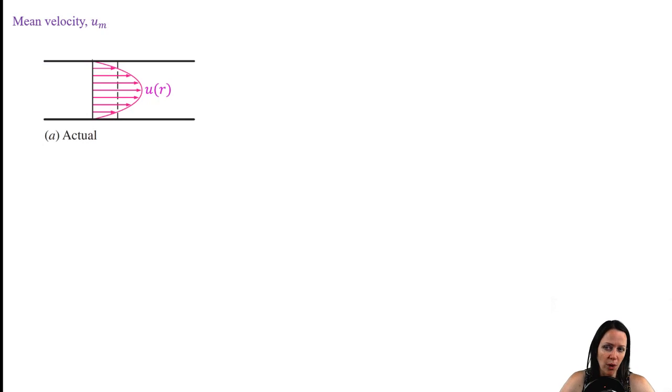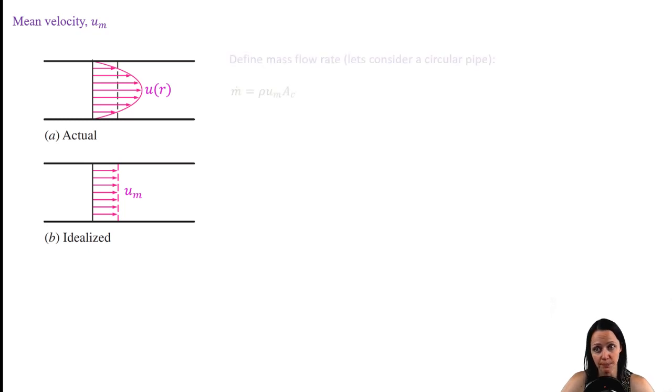All right, so now let's talk about velocity. We often don't really care about how velocity varies across the cross-sectional area, and it's much more convenient to refer to the average or the mean velocity flowing through our pipe. In order to define the mean velocity, we need to define the mass flow rate. You'll recall that the mass flow rate is density times velocity times the cross-sectional area through which the mass is flowing.